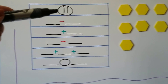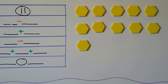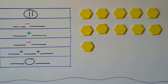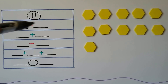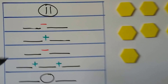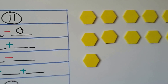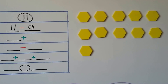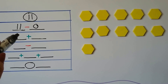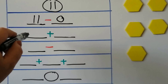In this table, we need to find ways to make 11. I have 11 counters — 10 and one more makes 11. It wants us to think of a subtraction sentence to make 11. The easiest one is 11 minus 0. If we don't take any away, we still have 11. How about an addition sentence? We could do 11 plus 0.